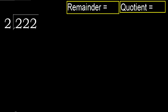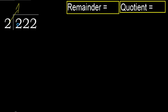222 divided by 2. 2 is not less, therefore with 2: 2 multiplied by which number is nearest to 2 but not greater? 2 multiplied by 2 is 4, which is greater. 2 multiplied by 1 is 2, which is not greater. Subtract, next.